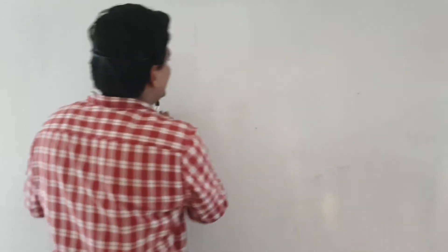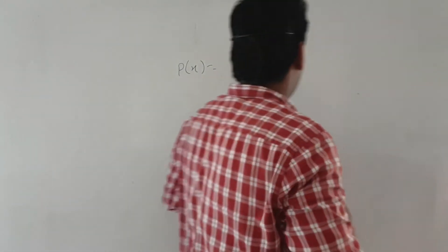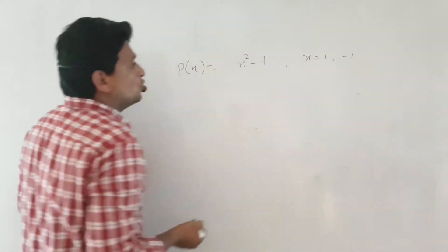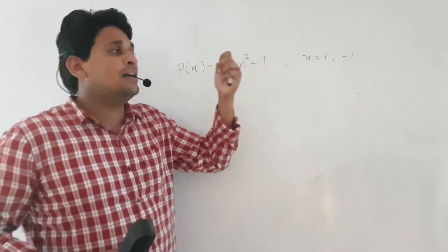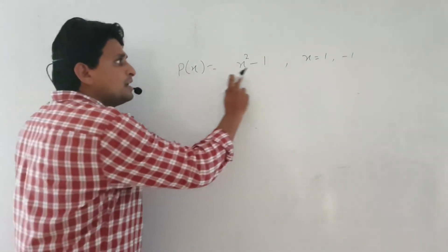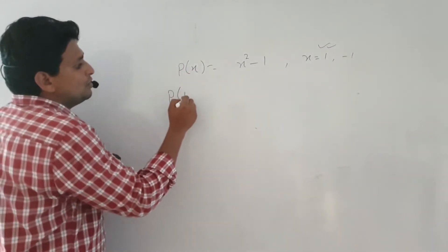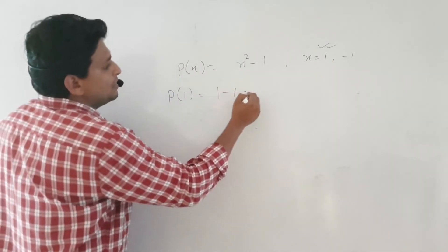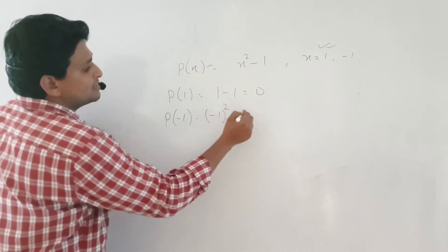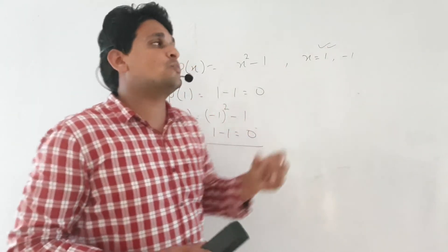Now, p(x) equals x squared minus 1. Check at x equal to 1 and x equal to minus 1 — verify whether both are zeros of the polynomial. p(1) equals 1 squared minus 1 equals 1 minus 1 equals 0. Then p(minus 1) equals (minus 1) squared minus 1 equals plus 1 minus 1 equals 0. So at both x equal to 1 and x equal to minus 1, you have zeros of the polynomial.